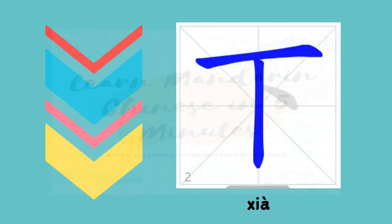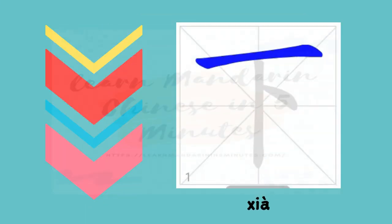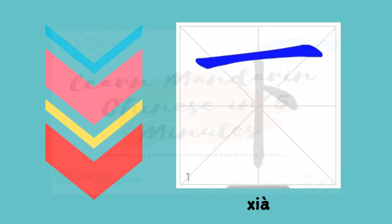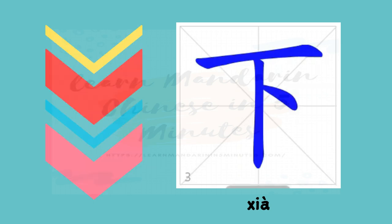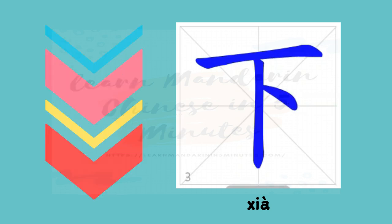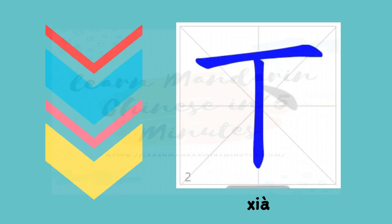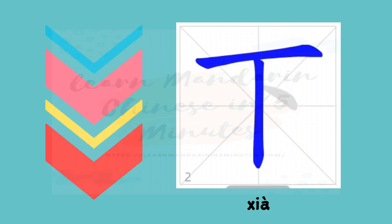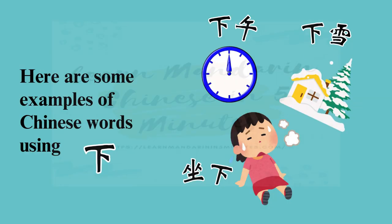Alright, let's take a quick look at this character, 下. This character is pronounced as 下, fourth tone, and the basic meaning is down or below. There are only 3 strokes, so it's super easy to write. 下 is used in so many everyday Chinese phrases. Let's check out some of the most useful ones.